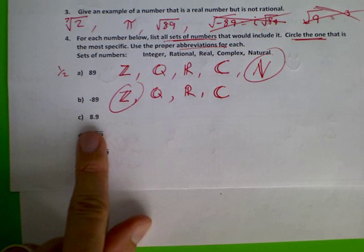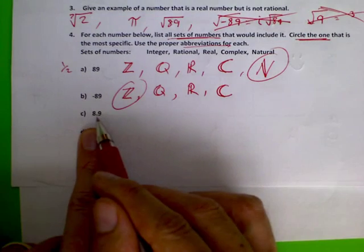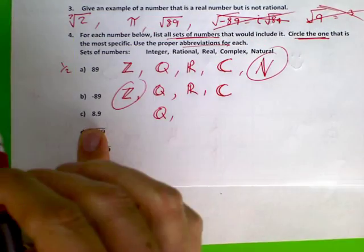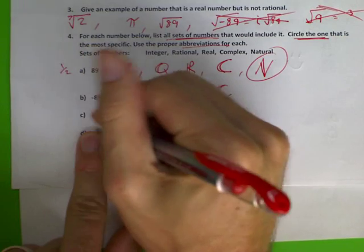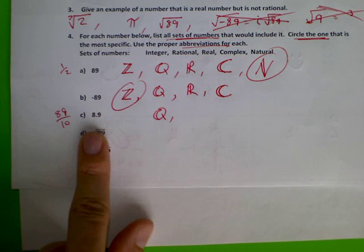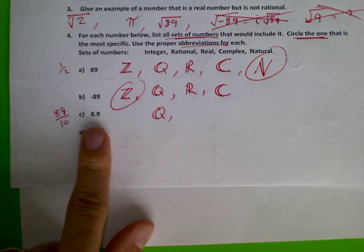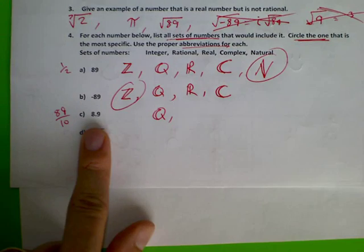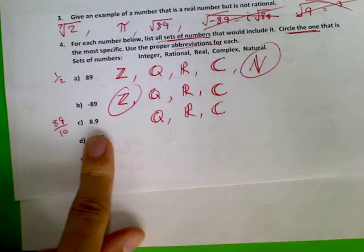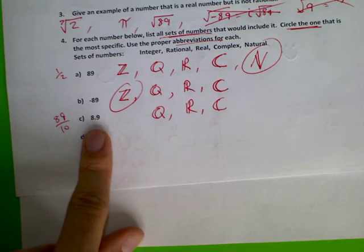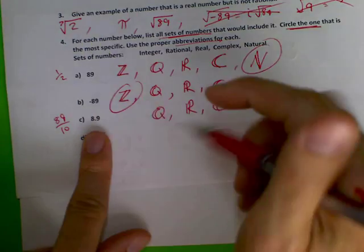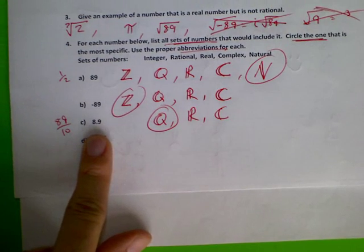Let's try 8.9. Is it an integer, a whole number? No. Could I write it as a fraction? Yes — move the decimal over and it's 89 over 10. Is it real? Yes, it's not imaginary. Complex? Yes, every number we talk about is complex. Natural number? You wouldn't count to 8.9 on your fingers. So the most specific name is rational — rational would be the most specific.